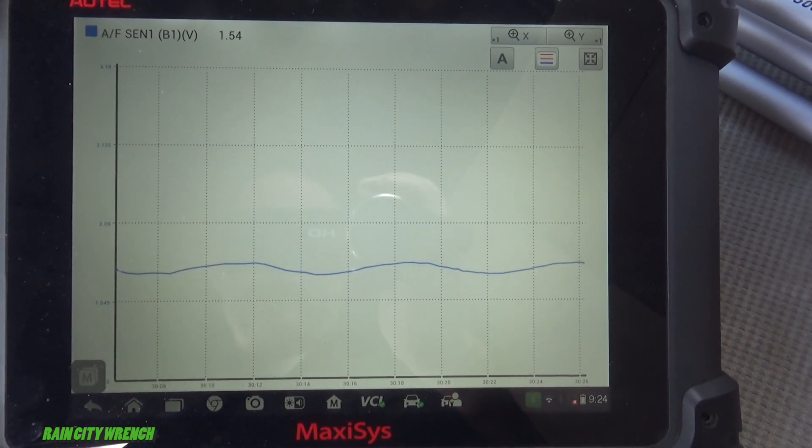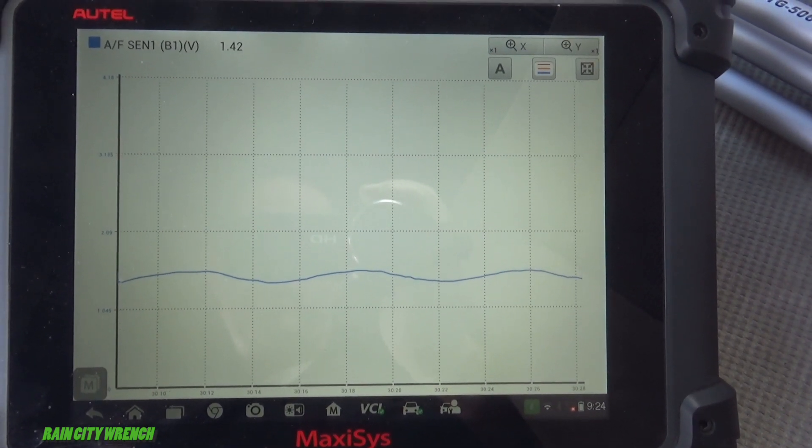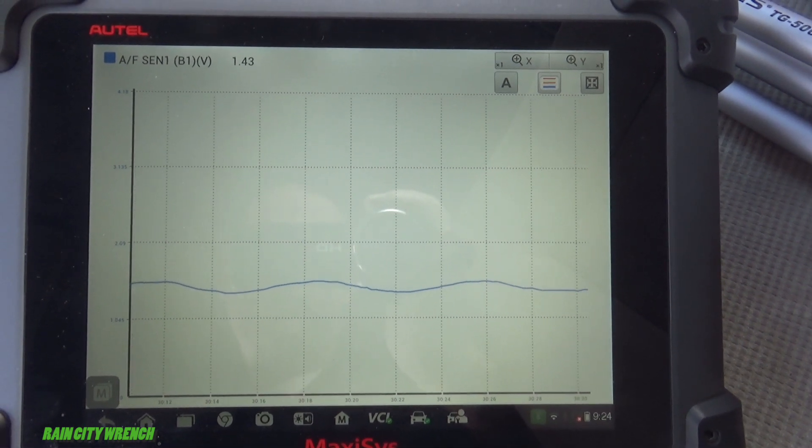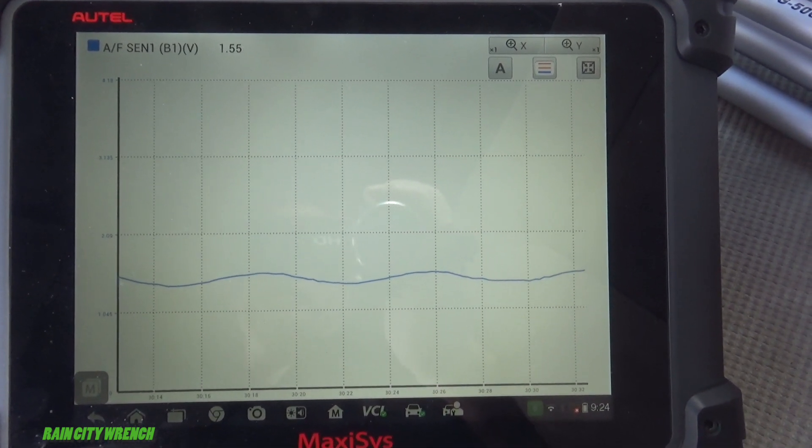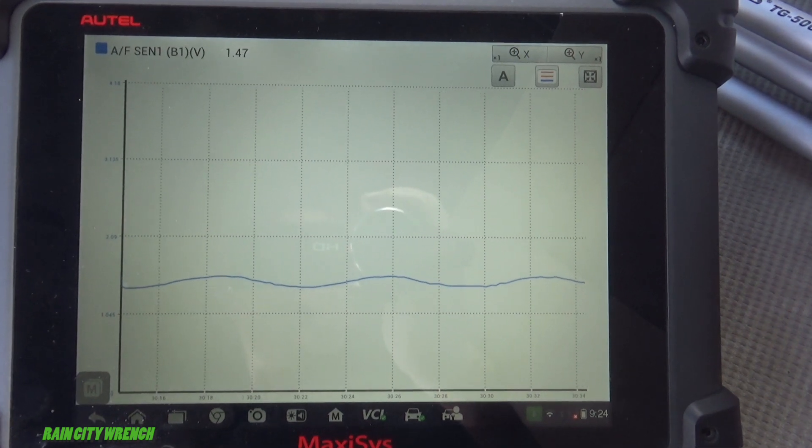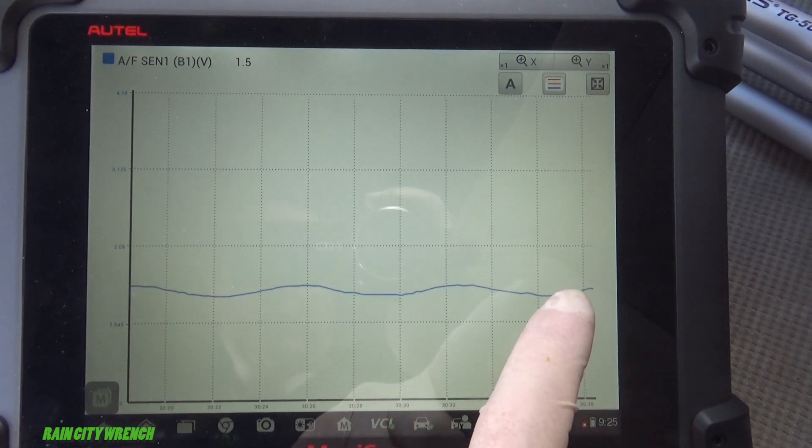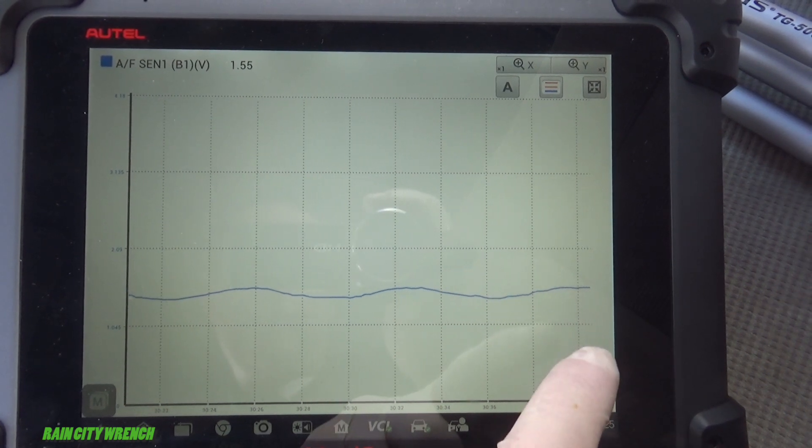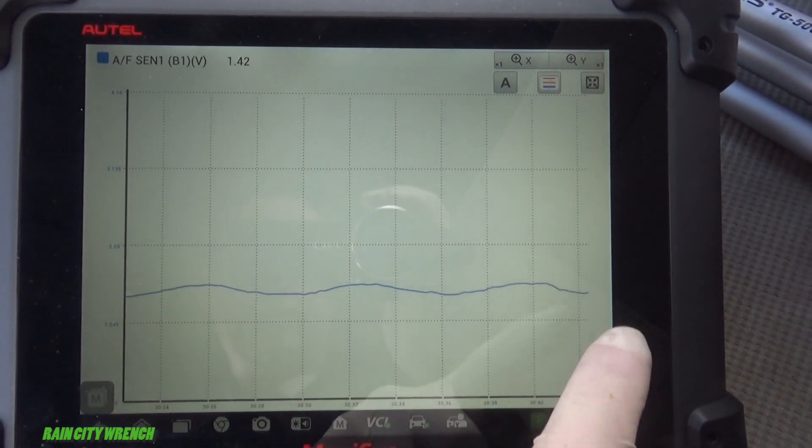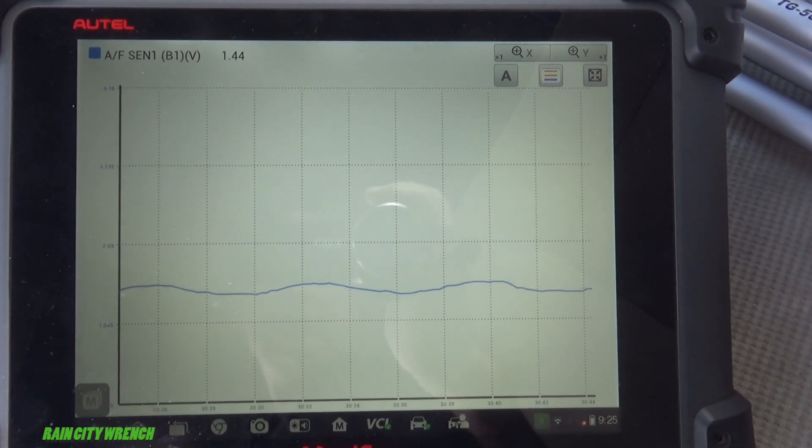The best way I found to test these without hooking up a bunch of fancy equipment and spending a bunch of time on it is to do a snap throttle, snap wide open throttle. What will happen is the voltage will temporarily dip and then it will spike and then it will recover. So let's go ahead and do that right now.